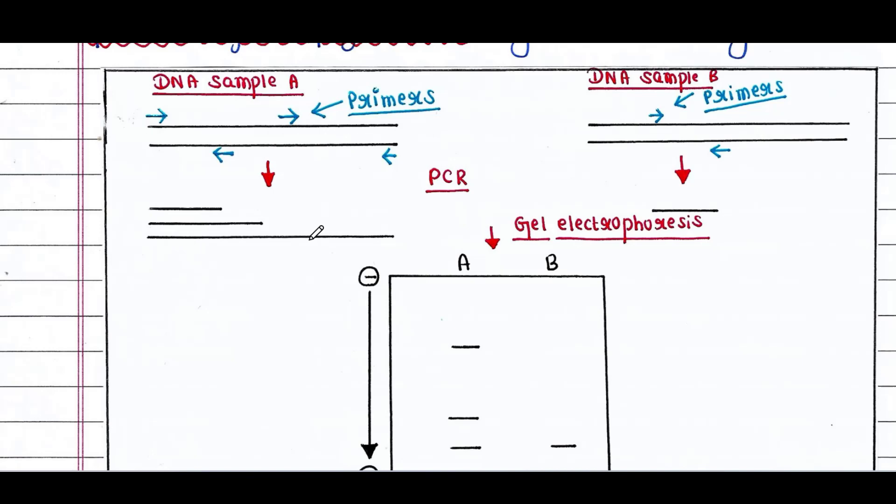Although we have used the same primer, sample B yields only one PCR product. These two primers amplify this region only. Why is it so? That means these two DNA samples are not exactly the same.